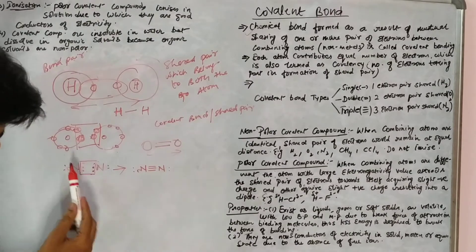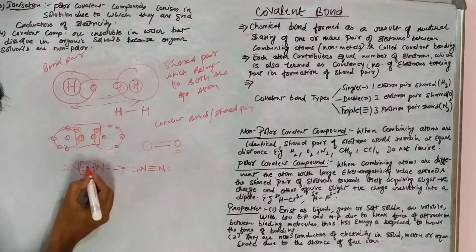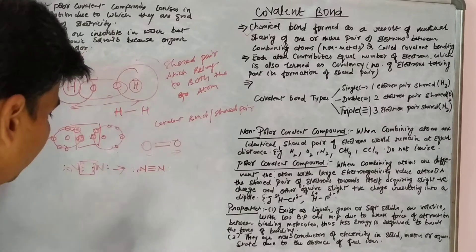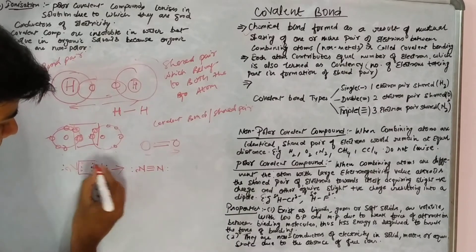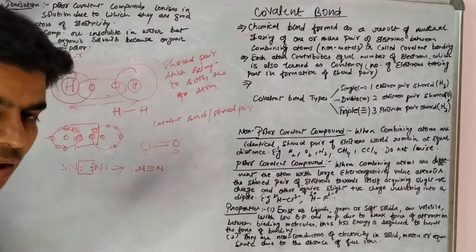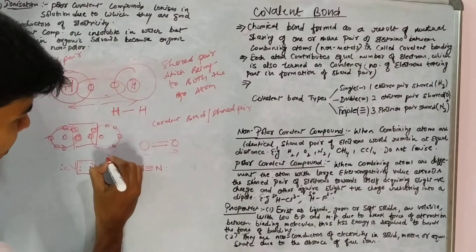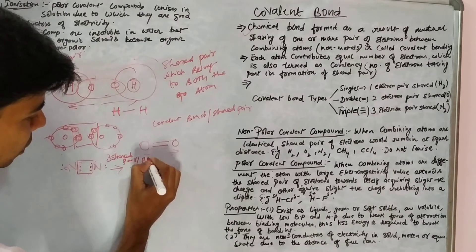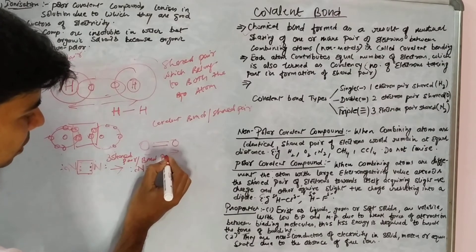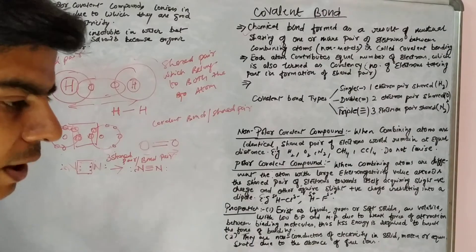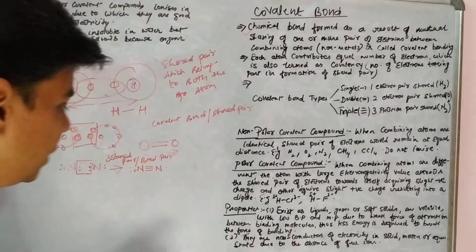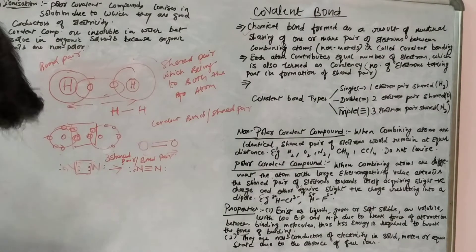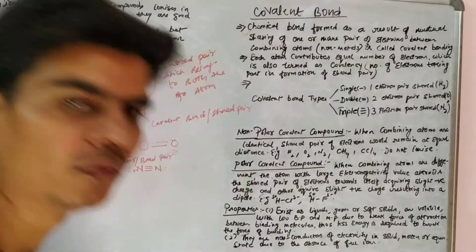Both nitrogen atoms have shared three electrons each, giving us three pairs of electrons sharing in nitrogen molecule formation. We have three shared pairs — that means three bonds, or three bond pairs of electrons. So nitrogen has a triple bond due to the sharing of three pairs of electrons. This is how sharing takes place in covalent bond formation.